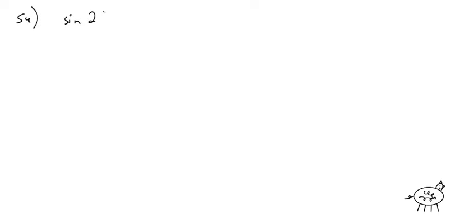Problem 54: sine of 2 gamma equals 2 tangent of gamma over 1 plus tangent squared of gamma. The right side is going to be easier to work with because it's a lot easier to convert into sine of 2 gamma — which is basically 2 sine of gamma cosine of gamma.